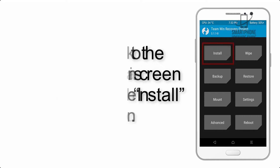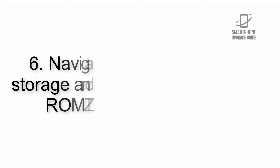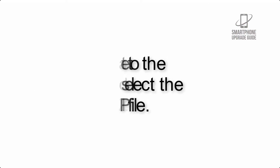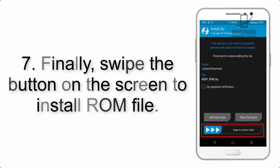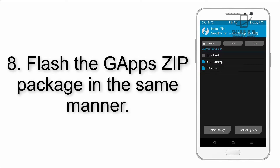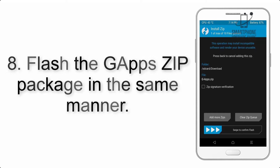Step 5: Go back to the recovery main screen and tap on the install button. Step 6: Navigate to the storage and select the ROM zip file. Step 7: Finally, swipe the button on the screen to install the ROM file.